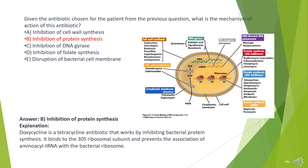The answer is B. Inhibition of protein synthesis. Doxycycline is a tetracycline antibiotic that works by inhibiting bacterial protein synthesis. It binds to the 30S ribosomal subunit and prevents the association of aminoacyl-tRNA with the bacterial ribosome.